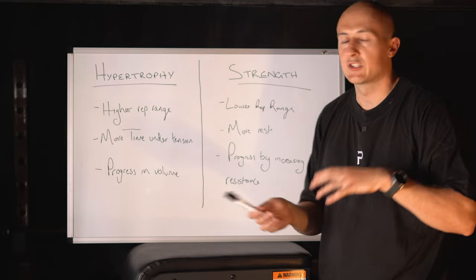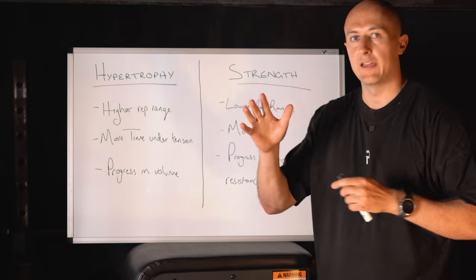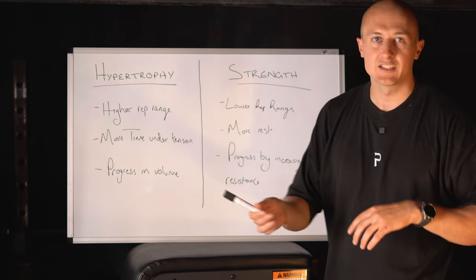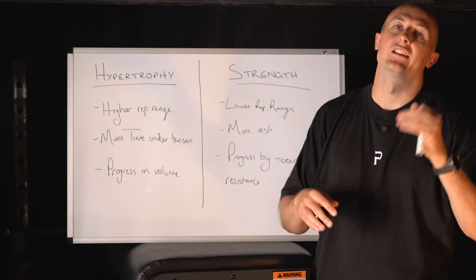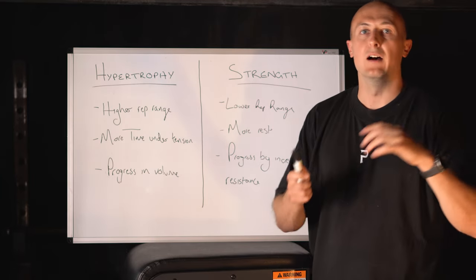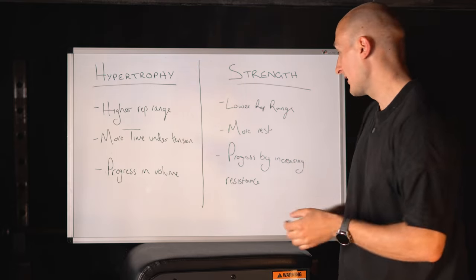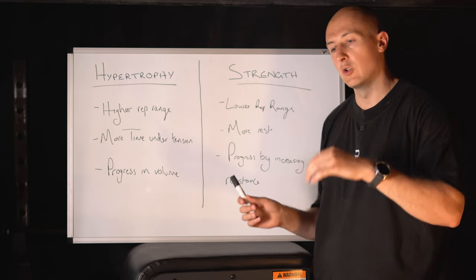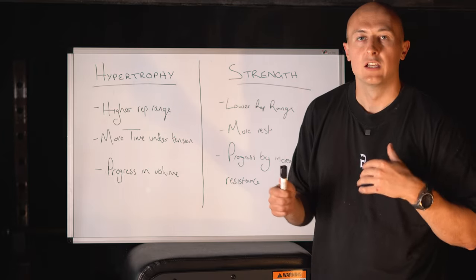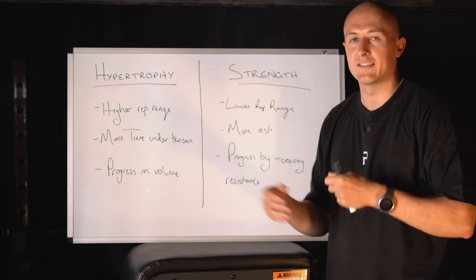Your strength training is all going to be based around those lower rep ranges, so you're talking one to maybe five reps at most. You're going to be having more rest between your sets, so you're looking at three to four minutes rest so you're looking to be fully recovered or more or less before you go into your next working set. When you progress, so week on week, you're looking to progress the weight or the resistance week by week, and that is how you're going to get stronger. That is your progressive overload.